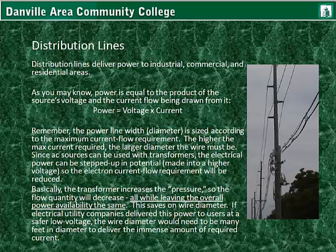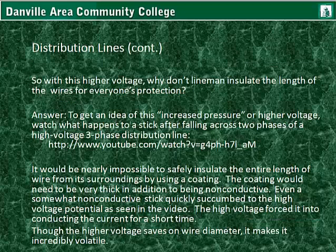If electrical utility companies delivered this power to users at a safer low voltage, the wire diameter would need to be many feet in diameter to deliver the immense amount of required current. Because if the voltage was low, the current requirement would have to go up in order to deliver the same amount of power. So with this higher voltage, why don't linemen insulate the length of the wires for everyone's protection? Watch what happens to a stick after falling across two phases of a high voltage three-phase distribution line, available on this YouTube link.